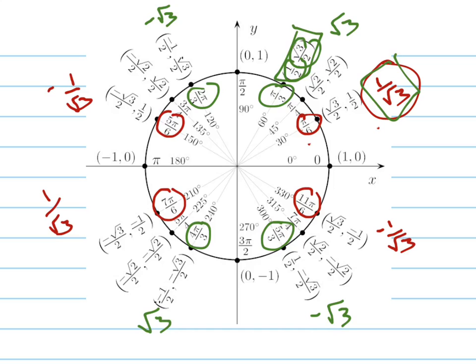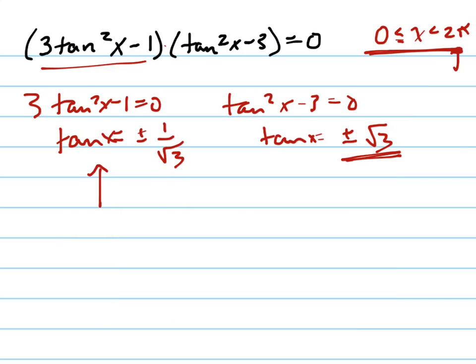So your answers are π/6, 5π/6, 7π/6, 11π/6. Let's write those down. I'll change color back. Your answers are π/6, 5π/6, 7π/6, and 11π/6, because those are all the angles that have a reference angle of 30 degrees, or π/6.